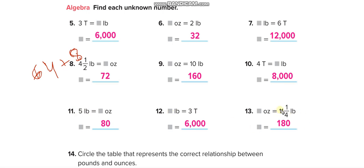Here again we convert 11 and one-quarter pounds. First convert the whole number, then the fraction, then add them. 11 pounds: 11 times 16 equals 176. For the one-quarter pound: if 1 pound is 16 ounces, then a quarter of 16 is 16 divided by 4, which equals 4. So 176 plus 4 equals 180 ounces.